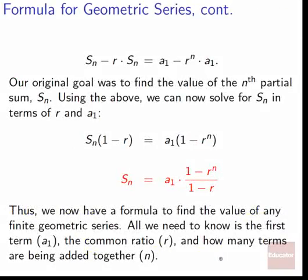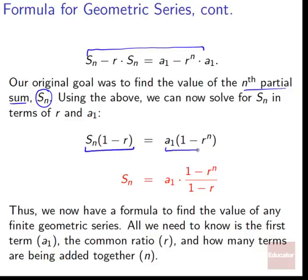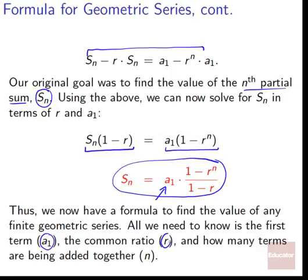Our original goal was to find S_n. Using the above, we solve for S_n: factor out S_n on the left to get S_n*(1 - r), factor out a_1 on the right, then divide both sides by (1 - r). We get the nth partial sum S_n = a_1 * (1 - r^n) / (1 - r). To use this formula, we only need the first term a_1, the common ratio r, and the number of terms n.